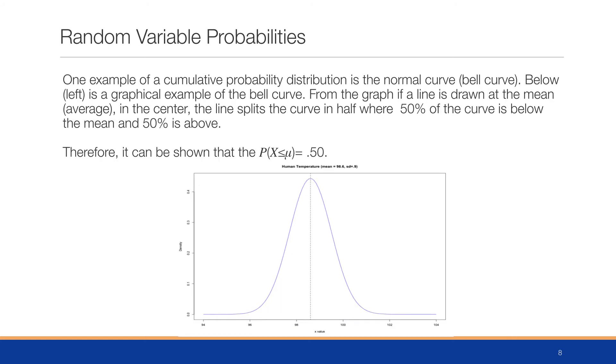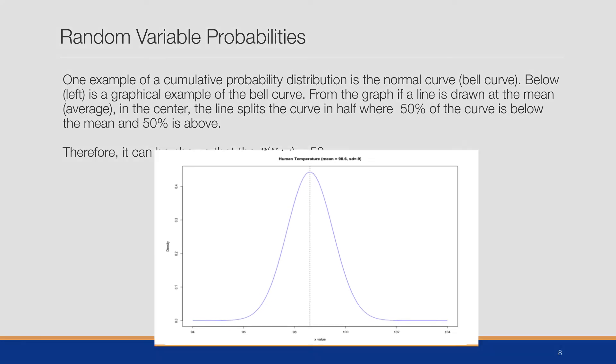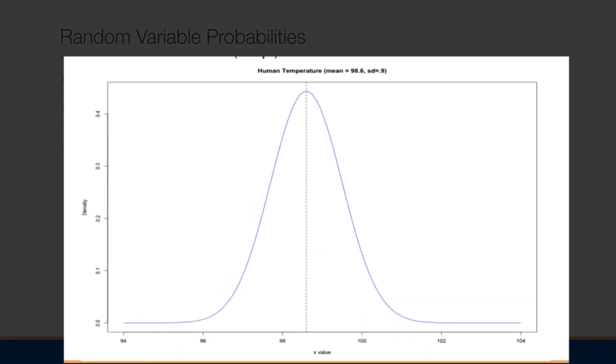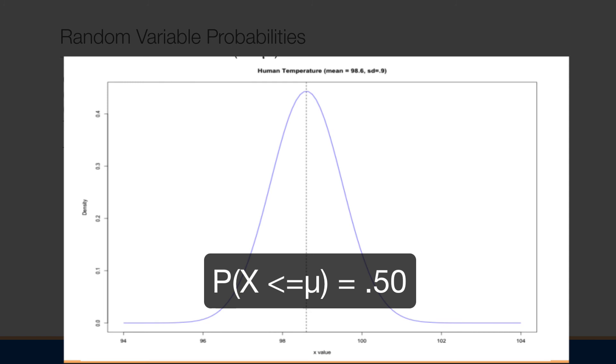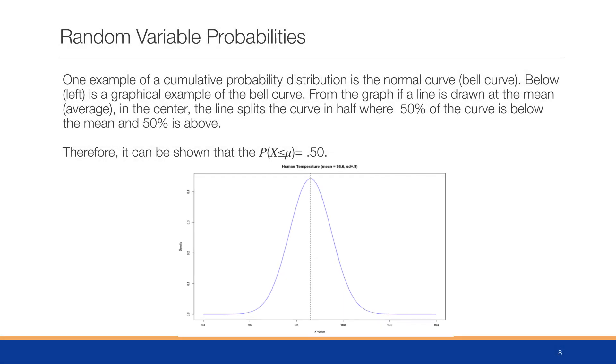One example of the cumulative probability distribution is the normal curve. From the graph, if a line is drawn at the mean in the center, it splits the curve in half where 50% of the curve is below and 50% is above. Therefore, you can show that the probability of x less than mu, or the average, is 0.5, and this is our probability distribution.